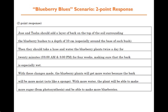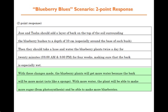Here's an example of a two-point response: Jose and Tasha should add a layer of bark on top of the soil surrounding the blueberry bushes to a depth of 10 centimeters, especially around the base of each bush. Then they should water the blueberry plants twice a day for 20 minutes, beginning at 8 a.m. and 8 p.m., for four weeks, making sure the bark stays especially wet. They explain how the bark acts like a sponge or reservoir, giving plants more water, enabling more photosynthesis, more sugar production, and ultimately more blueberries.